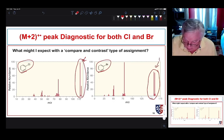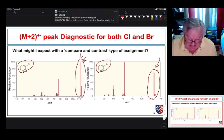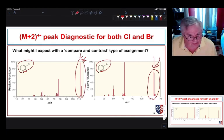But what's different about them? Well, for chlorobenzene, the base peak has chlorine in it. For bromobenzene, the base peak does not have bromine in it.